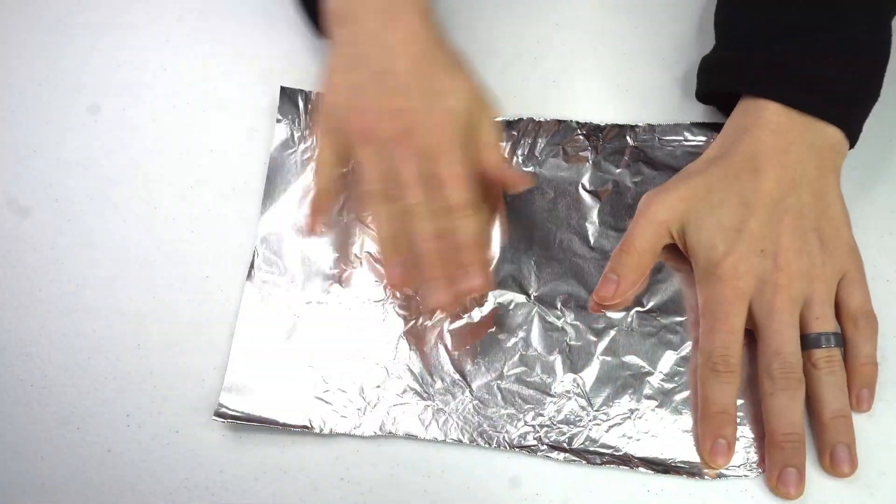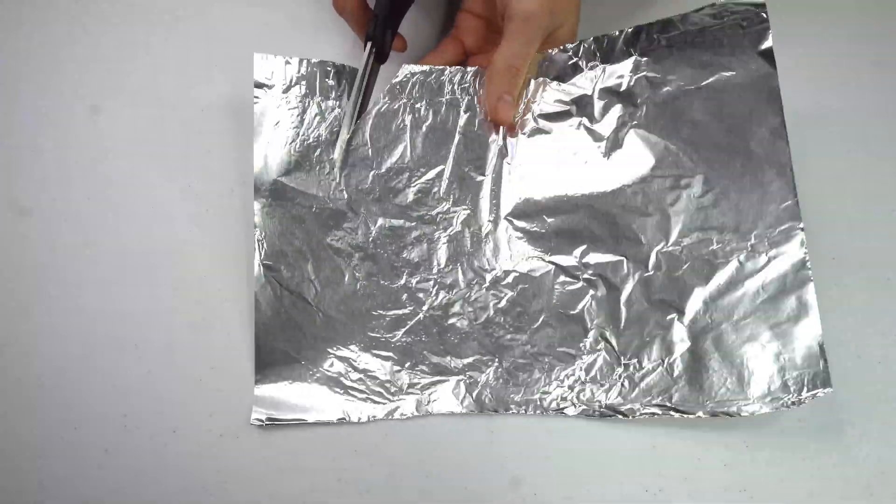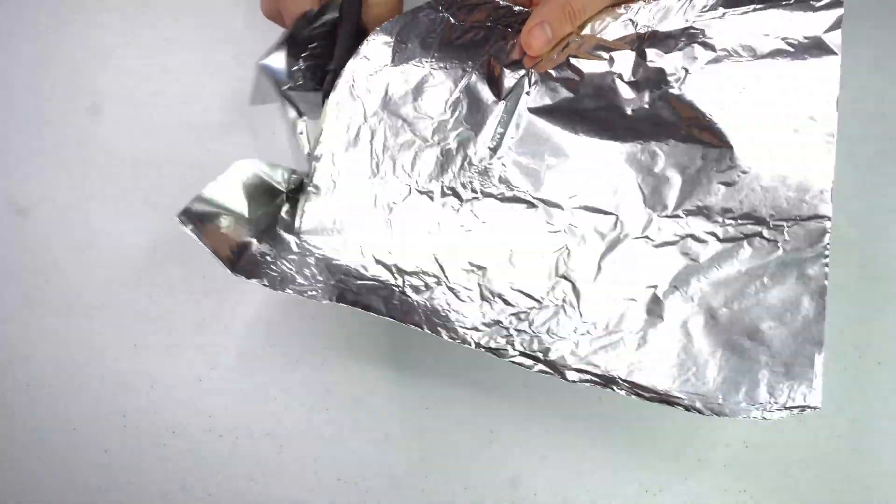Put the piece of aluminum foil flat on the table and straighten it out. Next you'll need some scissors to cut a circle out of that piece of aluminum foil you just ripped out.